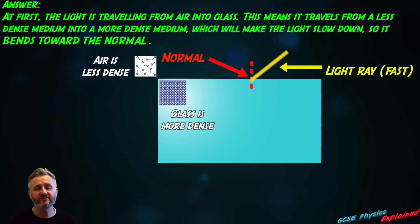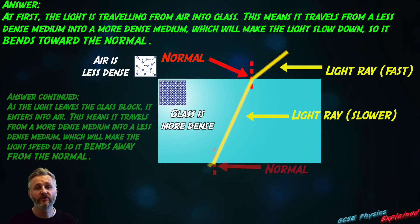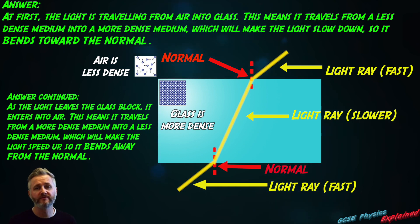Answer: at first, the light is traveling from air into glass. This means it travels from a less dense medium into a more dense medium, which will make the light slow down, so it bends toward the normal. As the light leaves the glass block, it enters into air. This means it travels from a more dense medium into a less dense medium, which will make the light speed up, so it bends away from the normal.